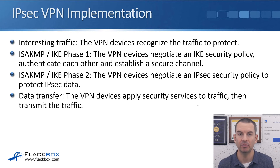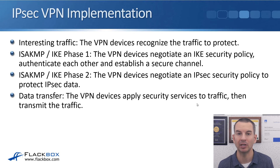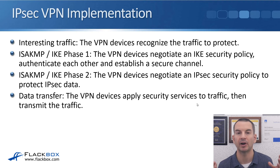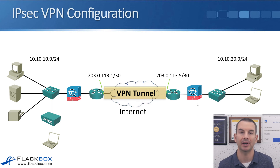In phase one, that's about the initial authentication and initial setup of the tunnel. In phase two, the VPN devices negotiate an IPsec security policy to protect the IPsec data — specifically, the settings and algorithms used for encrypting the actual data sent over the tunnel. Finally, you have the data transfer: the VPN devices apply security services to the traffic, encrypt it, and send it over the tunnel. I'm going to show an example configuration. You don't need to know this configuration for the CCNA exam, but I find it easier to understand something when you can see how it's actually configured.